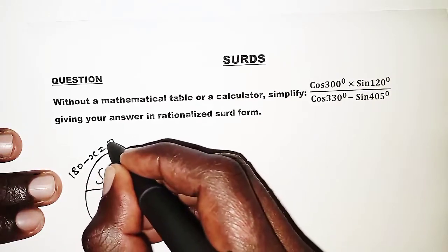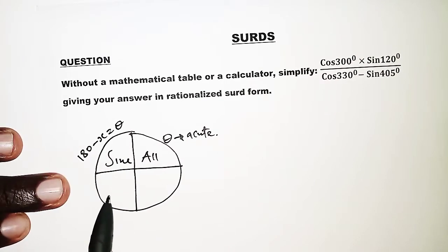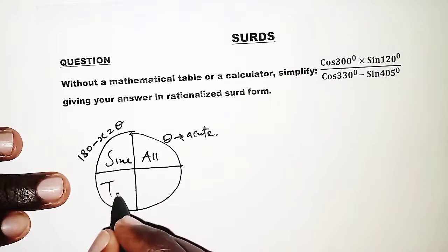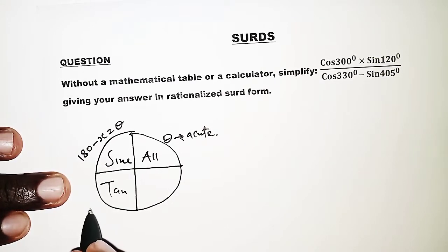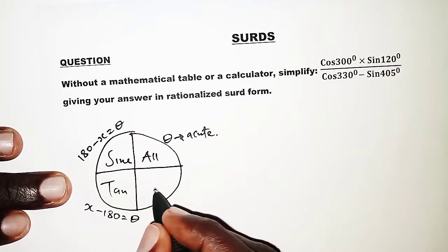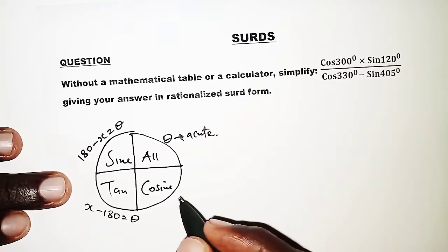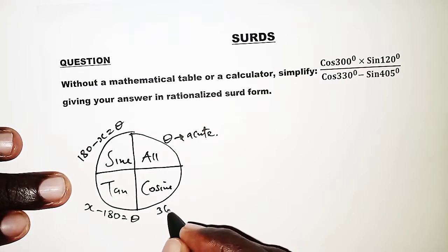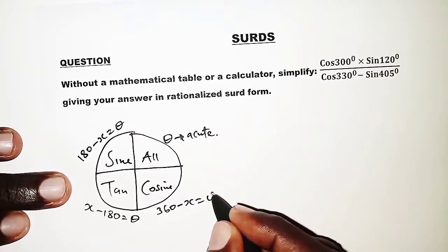The acute value in the second quadrant is obtained by 180 minus the angle given, which gives us theta, the acute angle. In the third quadrant, tangent only is positive while the rest are negative, so we have the angle minus 180 to get the acute angle. In the fourth quadrant, only cosine is positive, so we have 360 minus the angle to give us the acute angle.